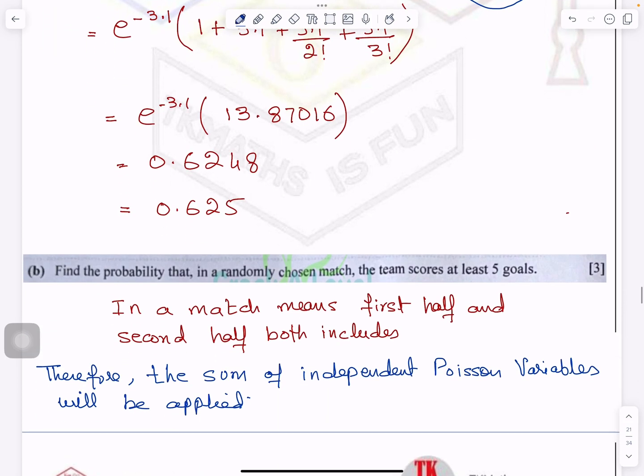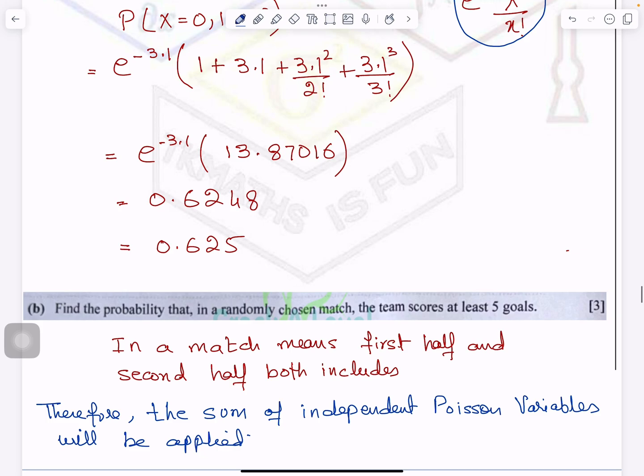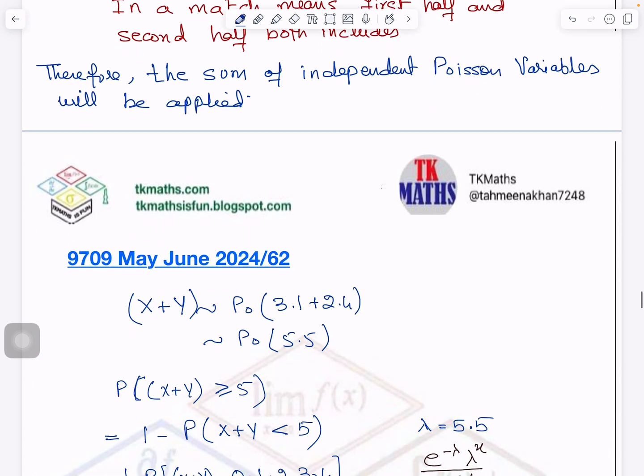Next part of the question is you have to find out the probability that in a randomly chosen match, now he is talking about match. It means first and second both half will be considered. Score is at least 5 which means greater than equal to 5 and now we will add up both the lambdas because we are talking about match.